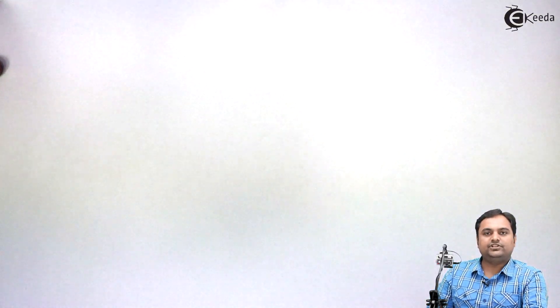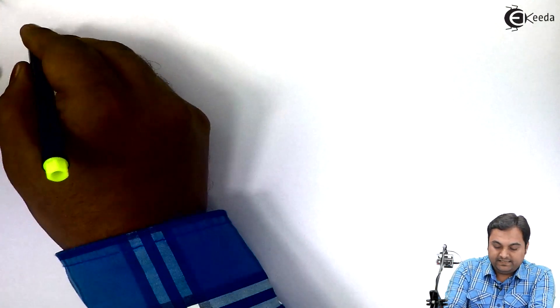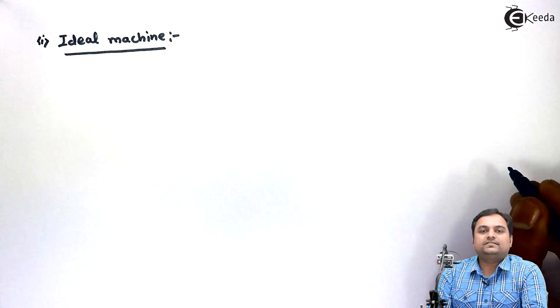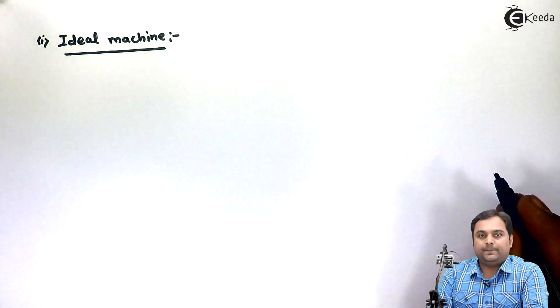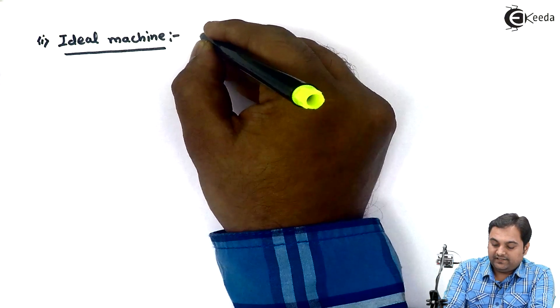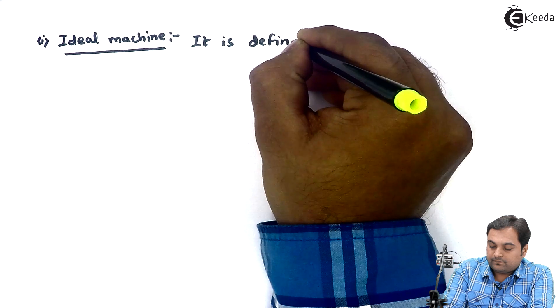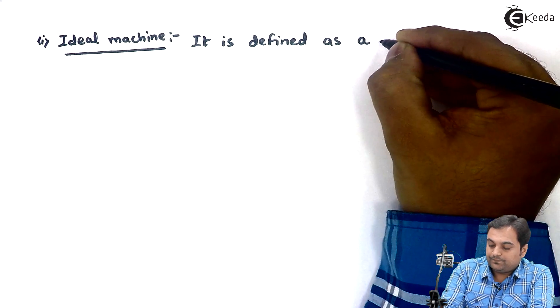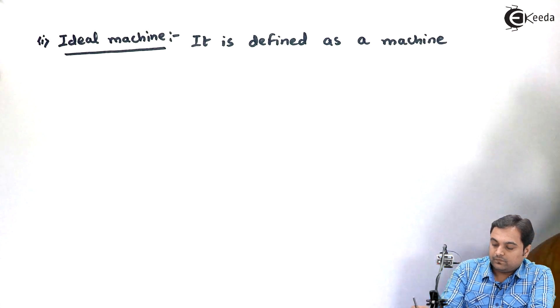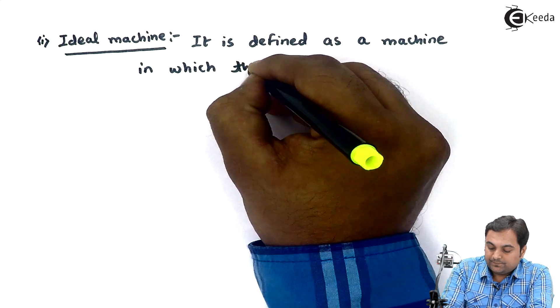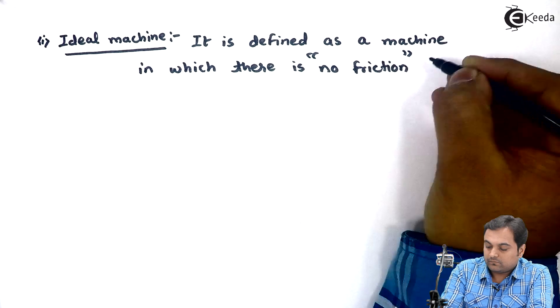In this video we will see the definitions of ideal machine, actual machine, ideal effort, and ideal load. Let us start with the first part — ideal machine. Ideal machine is defined as a machine in which there is no friction.